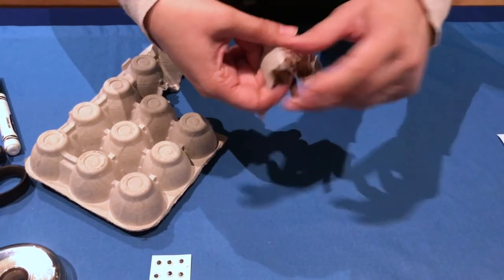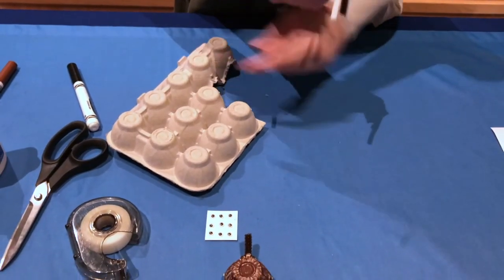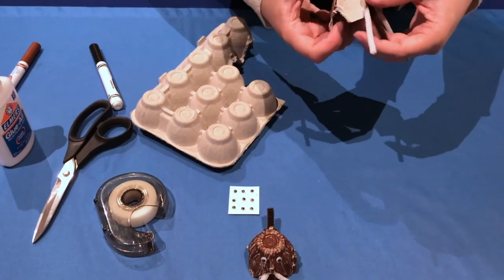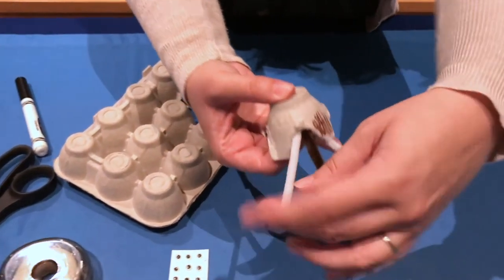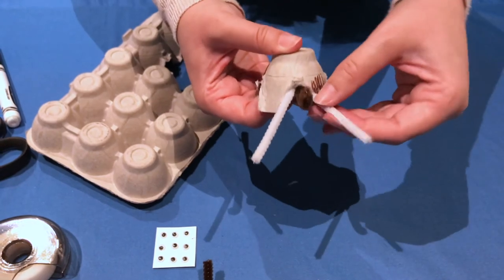The egg cup makes four nice little legs. You just want to make sure that you're cutting from the center of the row so that you get all four in there. And then you want to put the trunk up. And here's the tusks.